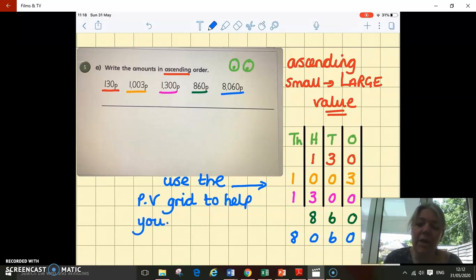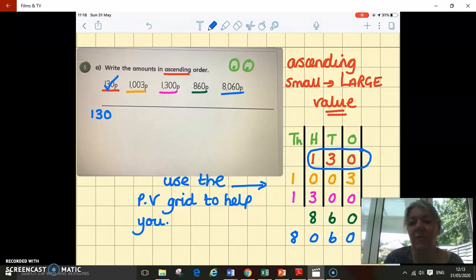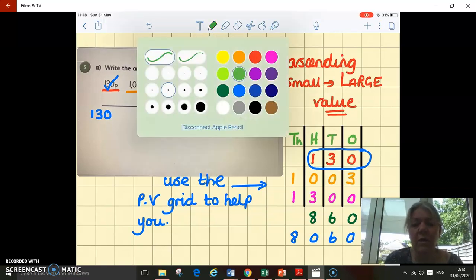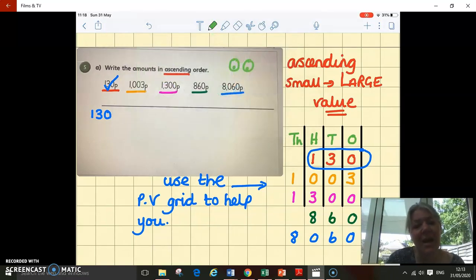I can see by looking at this place value grid that this amount has got 100, three tens, and zero ones. The other value that's got 100, it's got 800, and I know that one is much lower than eight. So I've added it onto my line and ticked it so I know I've used that one already.